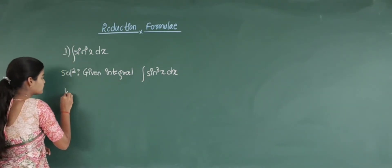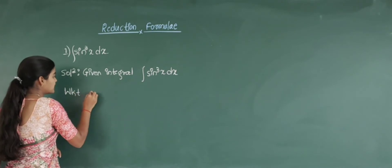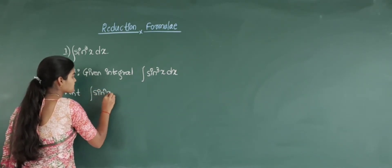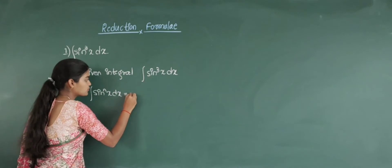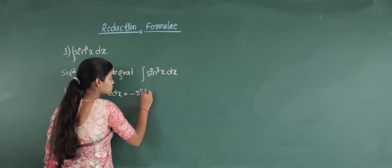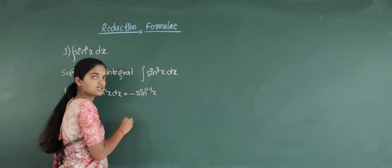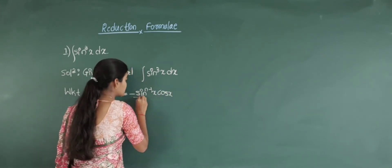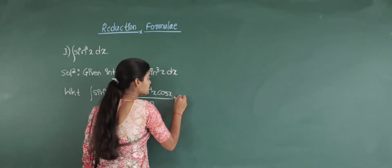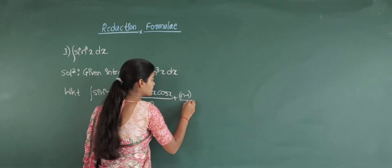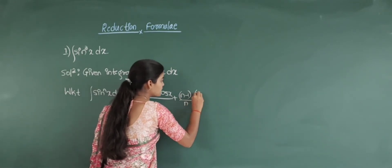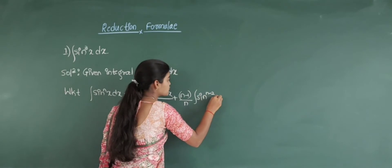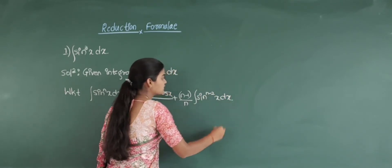So what is our reduction formulae? That is, we know that integration of sin raised to n x into dx is equal to minus sin raised to n minus 1 x into cos x divided by n, plus n minus 1 divided by n into integration of sin raised to n minus 2 x into dx.